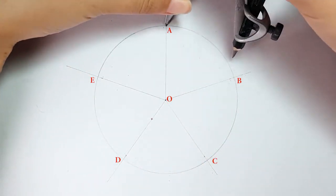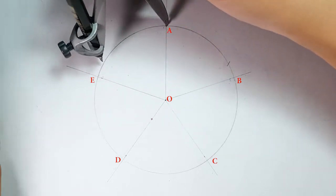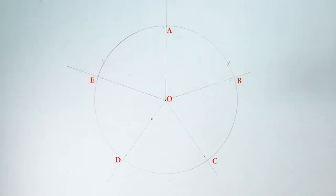then draw a mark on both sides of circumference. These points are F and G.